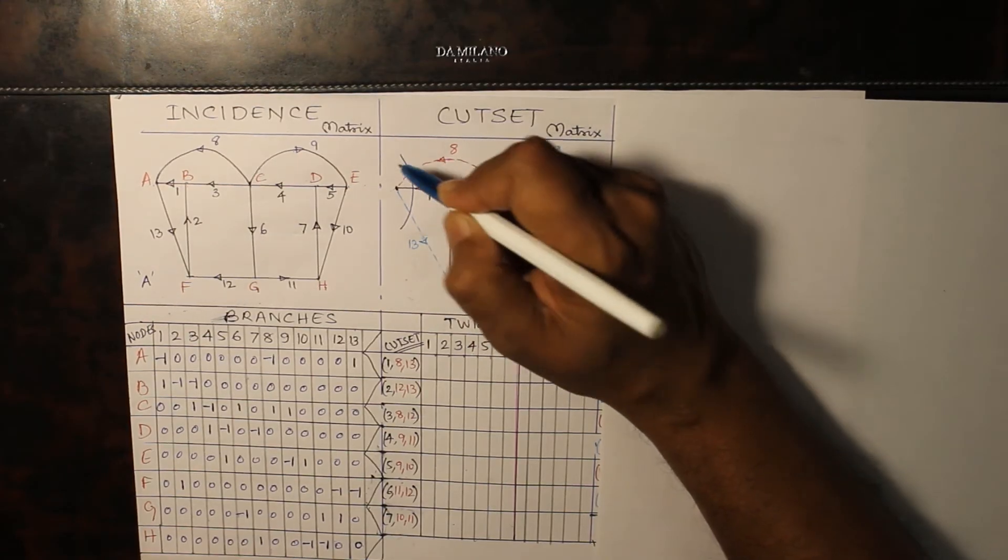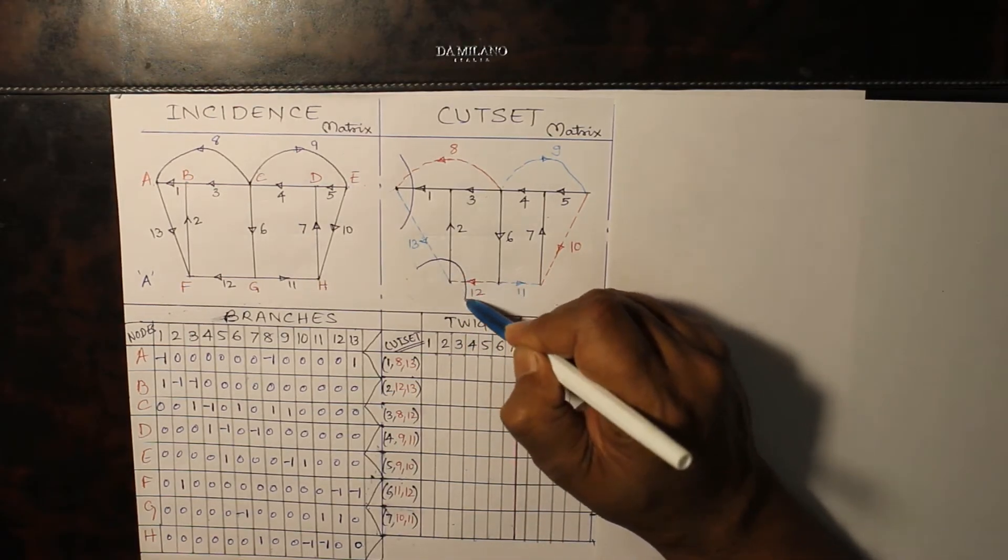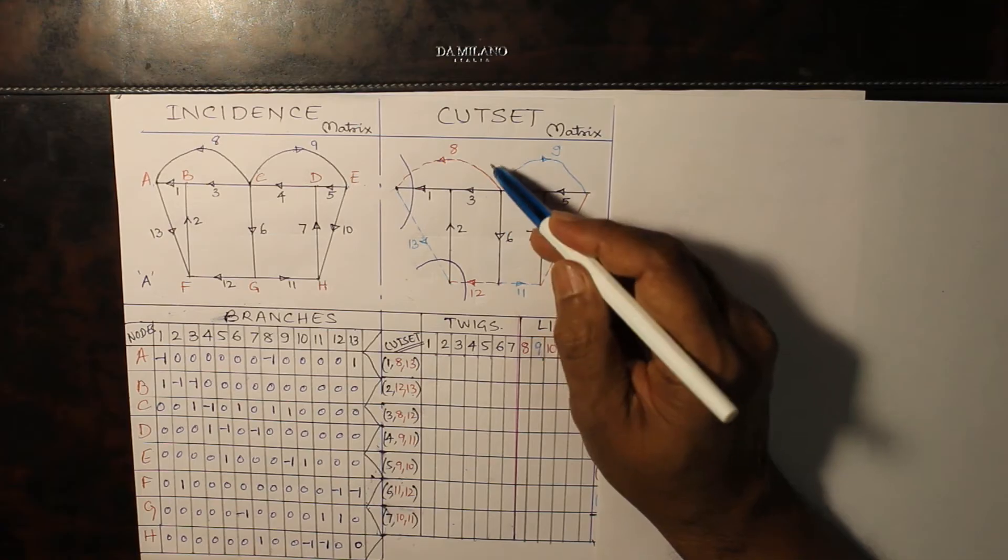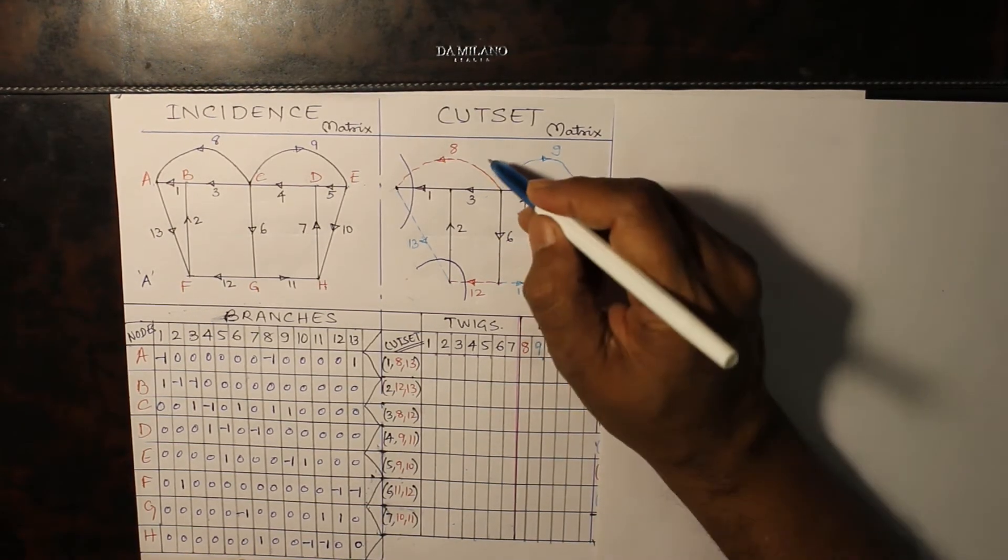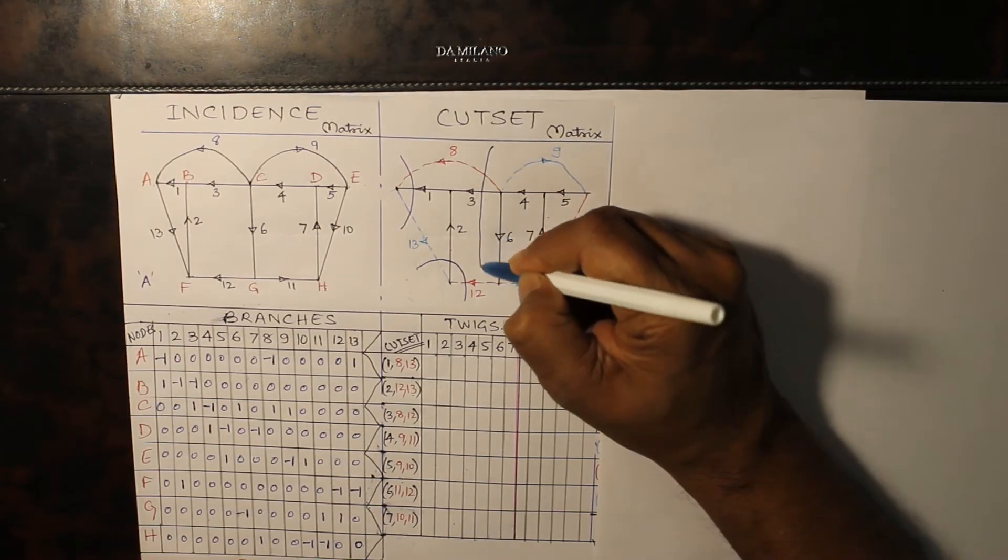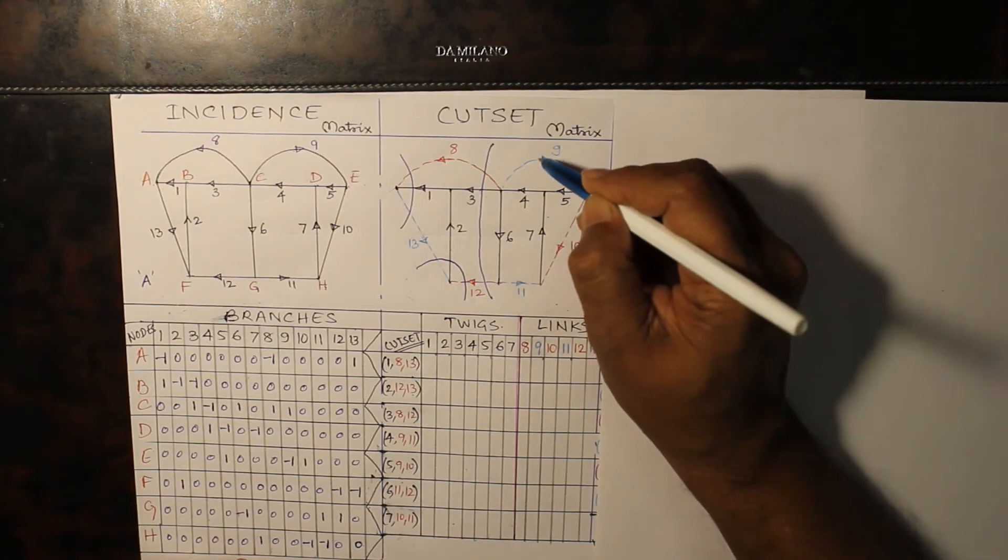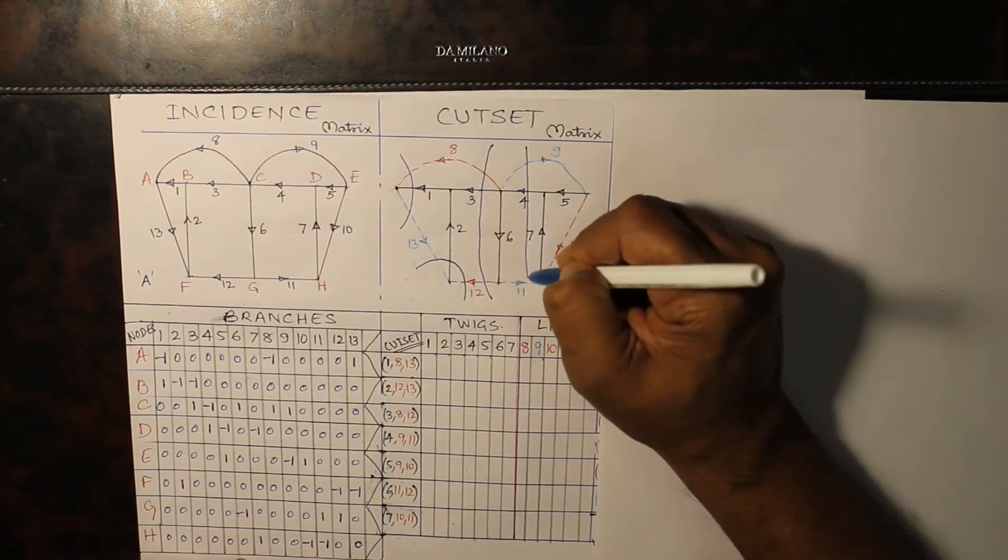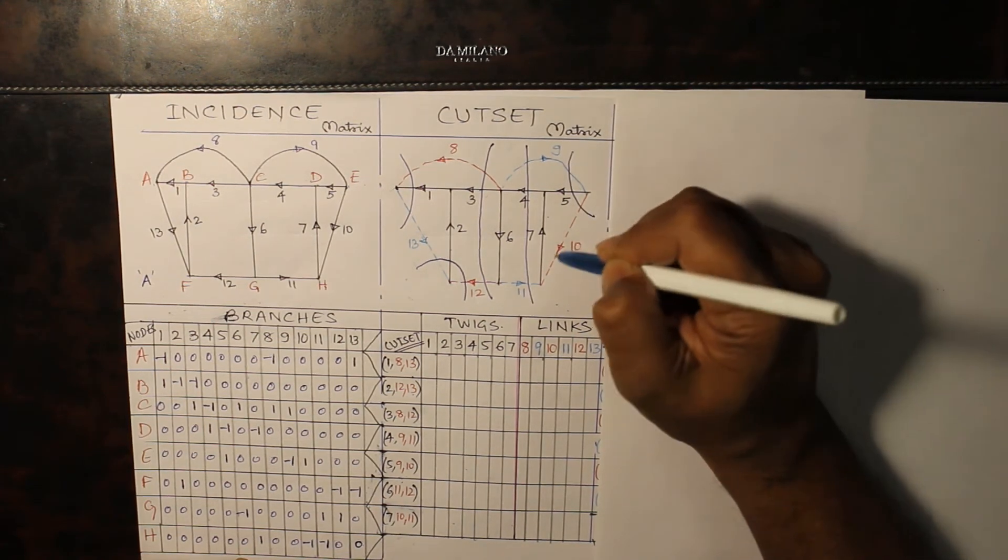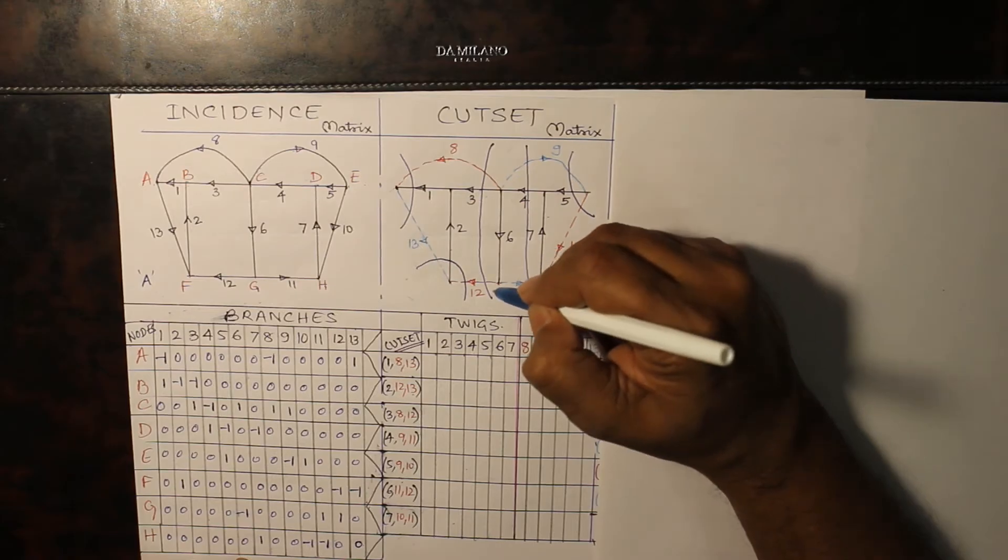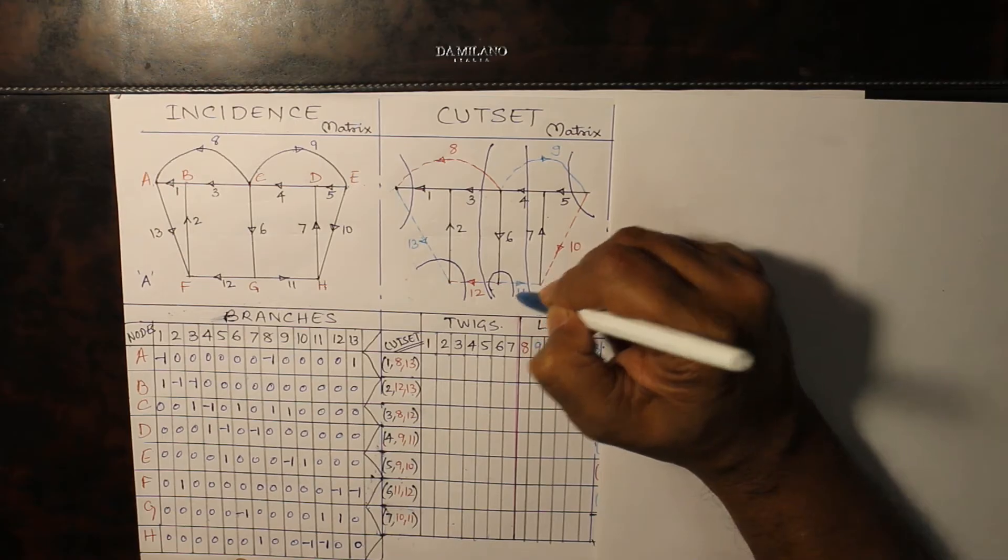First cut set, 1, 8 and 13. Second cut set, when 2 is cut, 2, 12 and 13. Third cut set, you have to cut such that there can be any number of links, but only one link. So, 3, 8 and 12. 4, 4, 9 and 11. 5, 9 and 10. 6, 6, 11 and 12, like this, 6, 11 and 12.